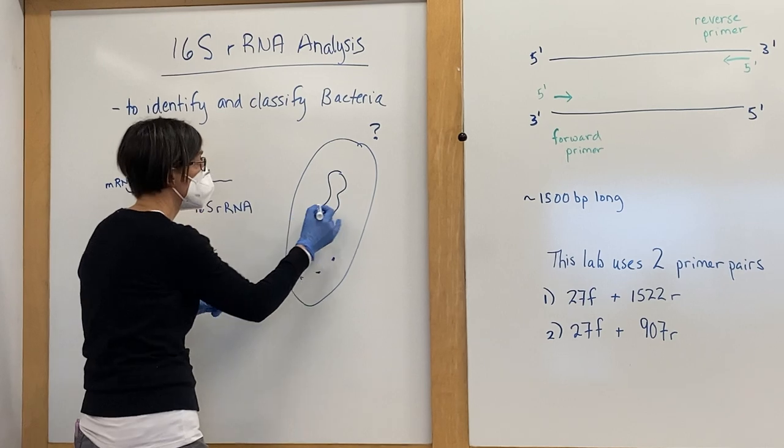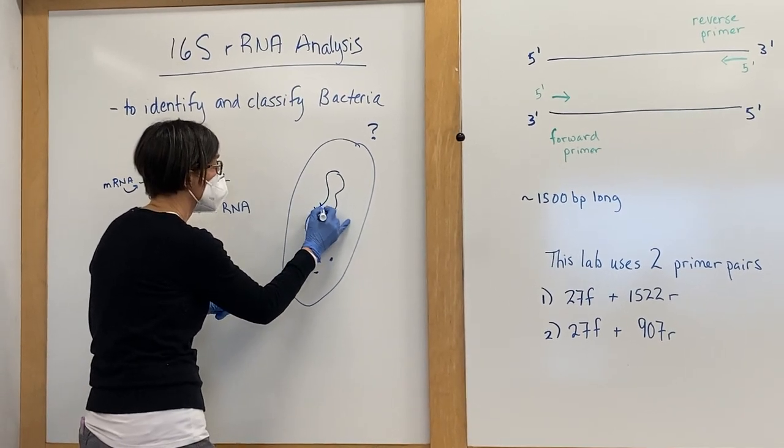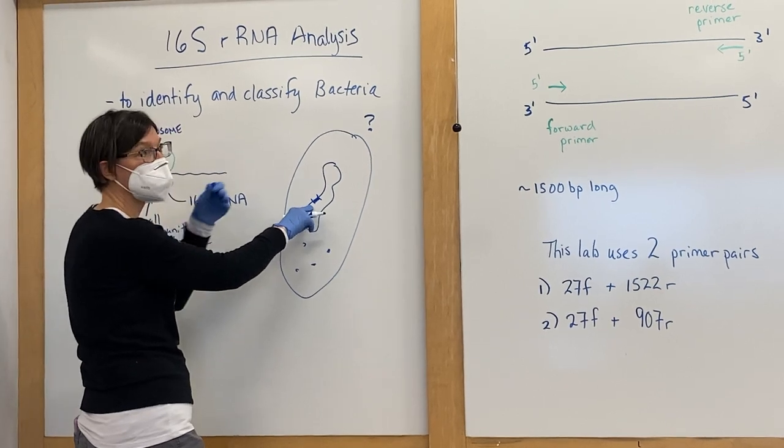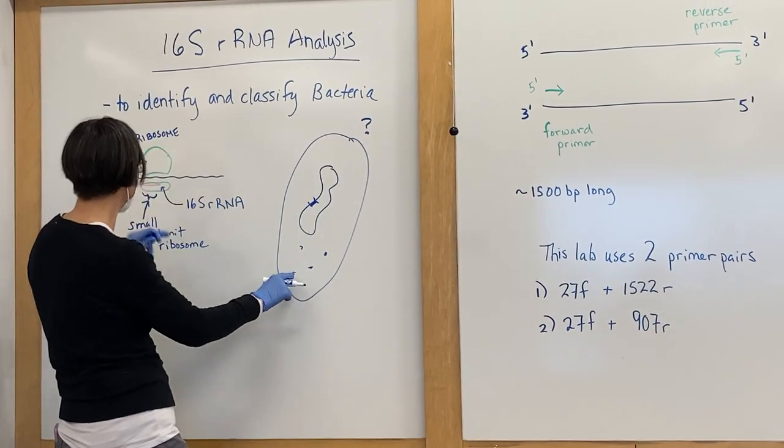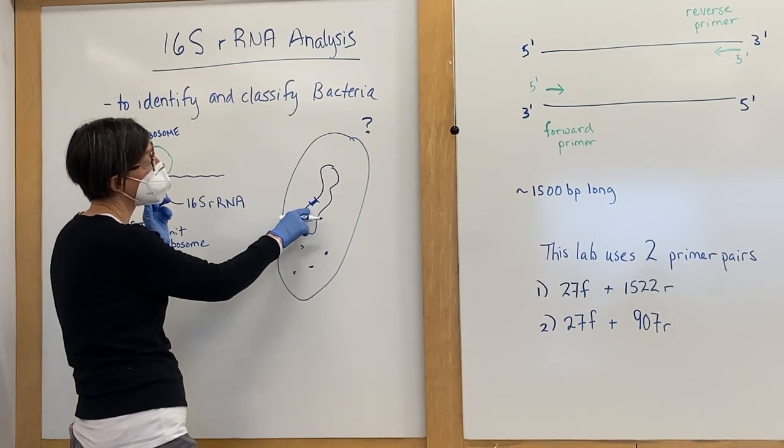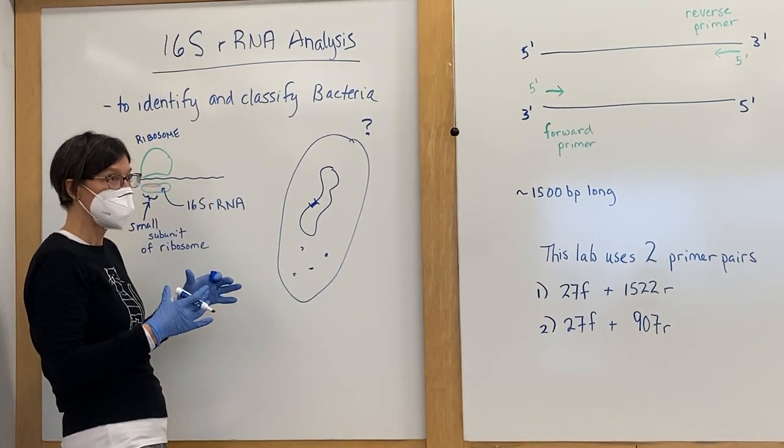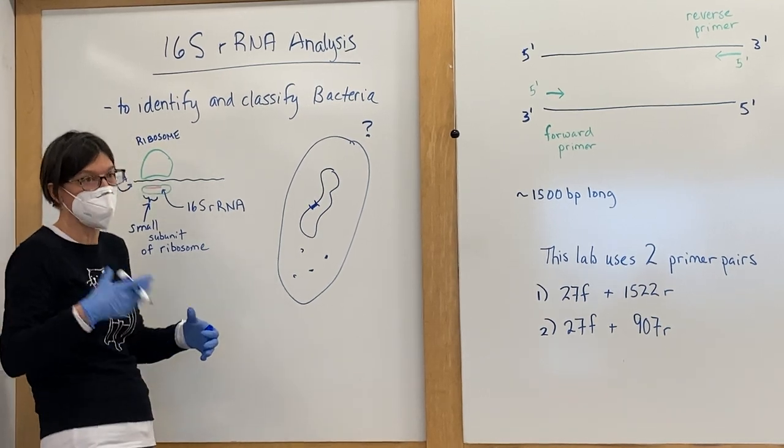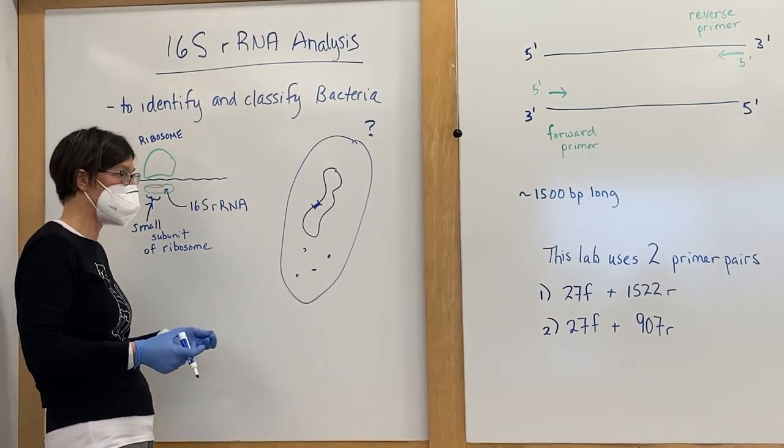So our goal is to recover the specific region on the chromosome that encodes the 16S rRNA. And in order to recover it, we want to get a lot of it so that we can work with it easily. Because it's easier to work with something if you have a lot of it than if you have a little bit of it.